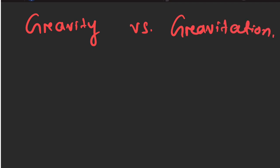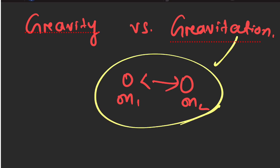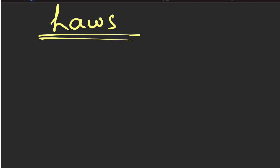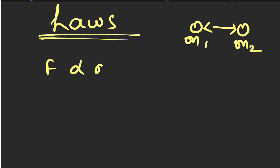We know that any two objects — M1 and M2 — exert an attraction force on each other. This is called the gravitational force. The force F will be directly proportional to the product of the masses and inversely proportional to the square of the distance between them.